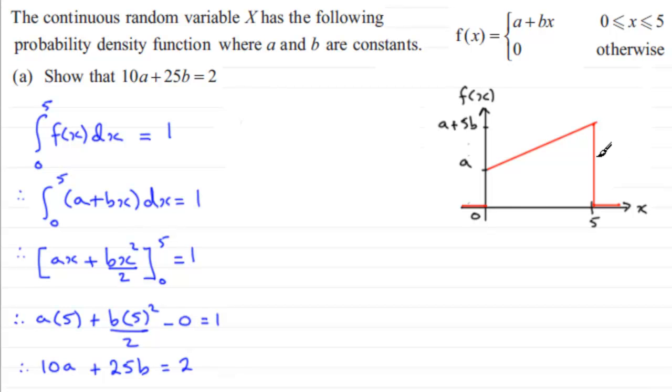Now what we can do is we can see that we've got a geometrical shape here, a trapezium, and we know that the area underneath the graph should come to 1. So working off the area of a trapezium idea we can work it out like that.